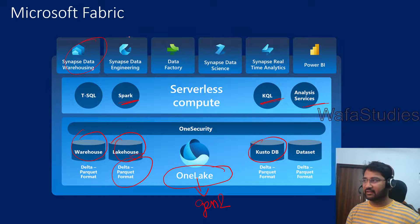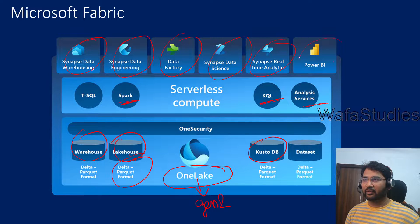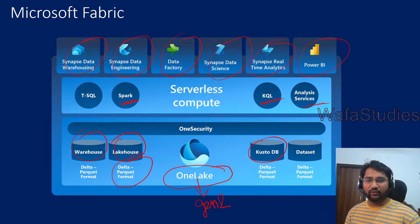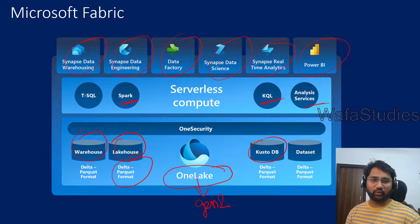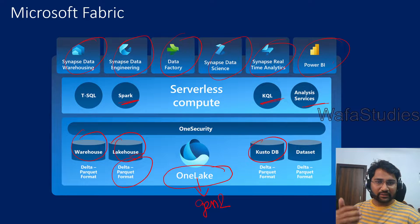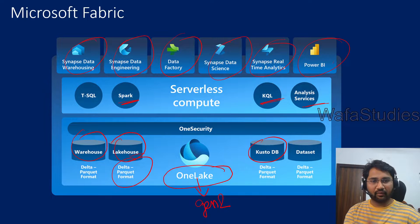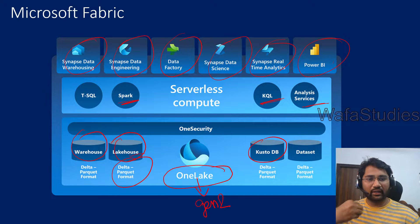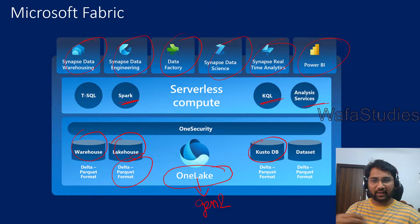So in Microsoft Fabric: data warehousing, data engineering, ETL and data integration, data science, real-time analytics with Kusto, and Power BI reporting — everything is available in a single product. In a single line: Microsoft Fabric is a complete new product from Microsoft that gives end-to-end analytics needs. Data Factory capabilities, Synapse capabilities, Spark capabilities, Power BI capabilities — everything put together into one product called Microsoft Fabric.